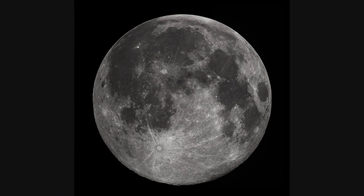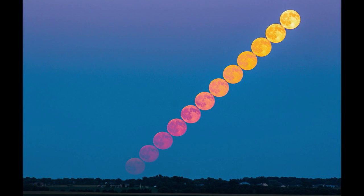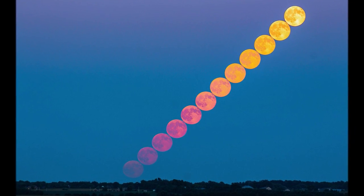From our point of view here on Earth, the diameter of the moon takes up about half a degree in the sky. This means that if you were to place them side by side, it would take 720 moons to complete a full circle.